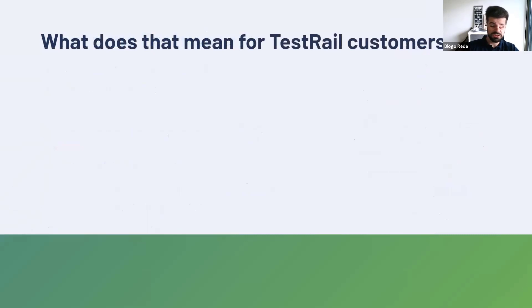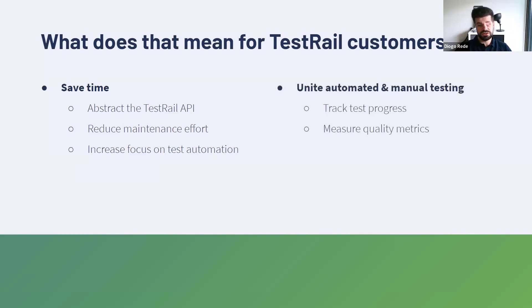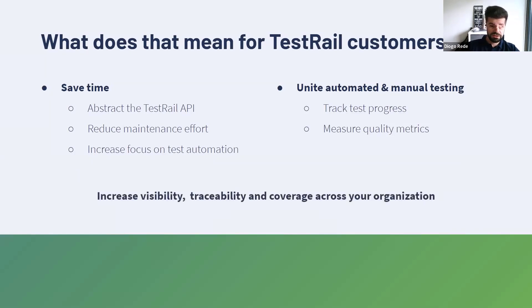What does that mean for TestRail customers? This means you can save time because the CLI abstracts the TestRail API, so you don't have to deal with the complexity of the API or things like rate limits. It reduces maintenance effort because there's a community using this. You'll be able to use your saved time to actually increase the focus on your test automation. This also means you unite automated and manual testing in one place — you can track your test progress, measure your quality metrics, generate reports, and ultimately increase visibility, traceability, and coverage across your organization.